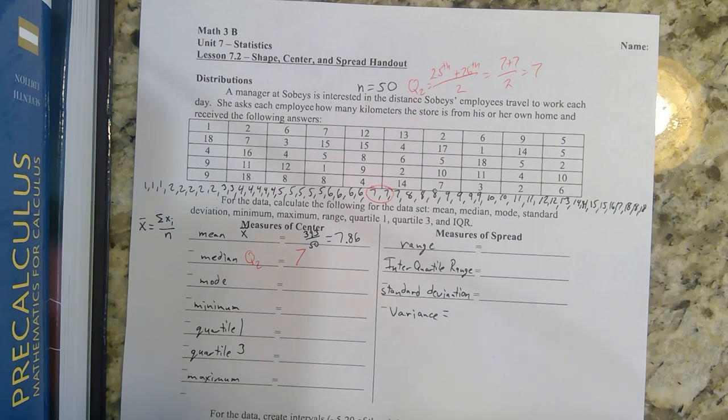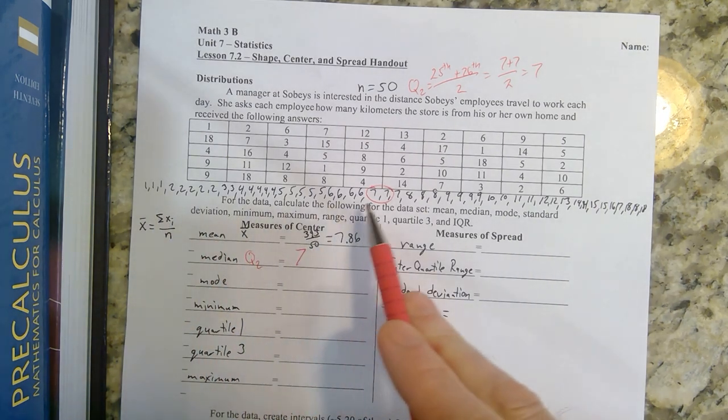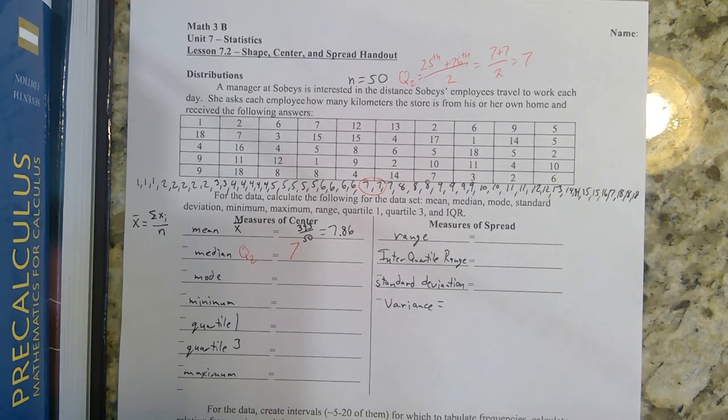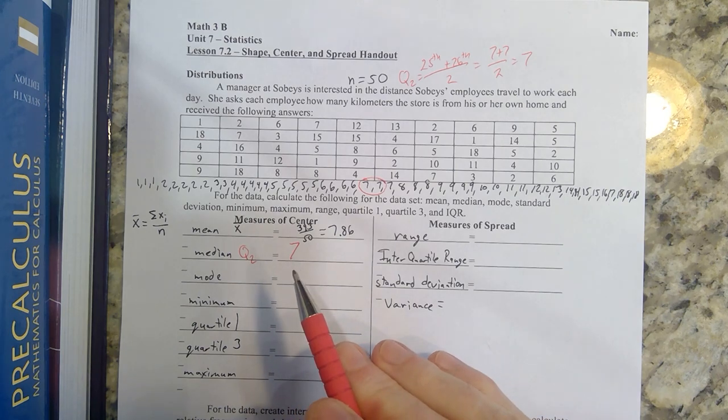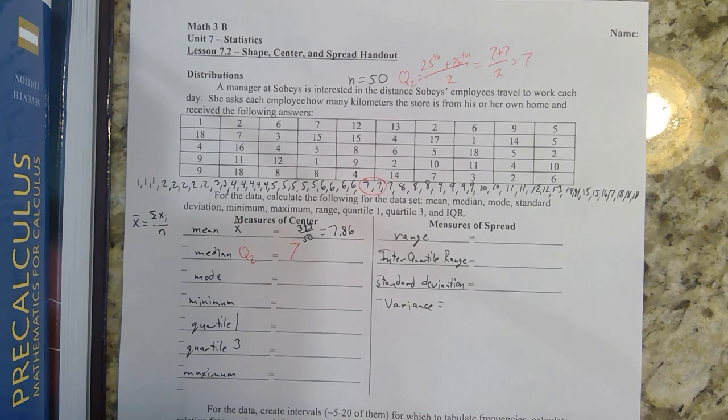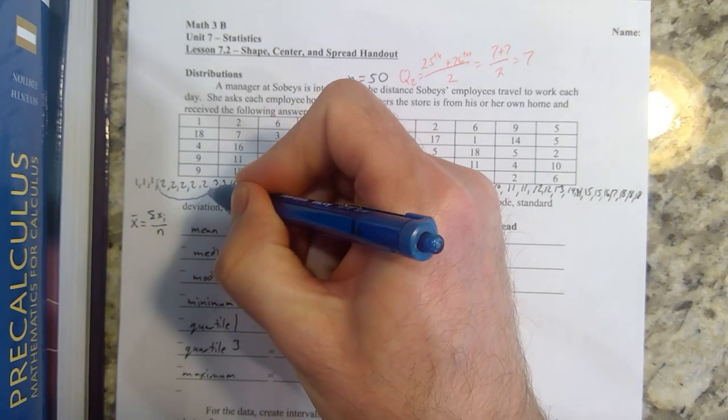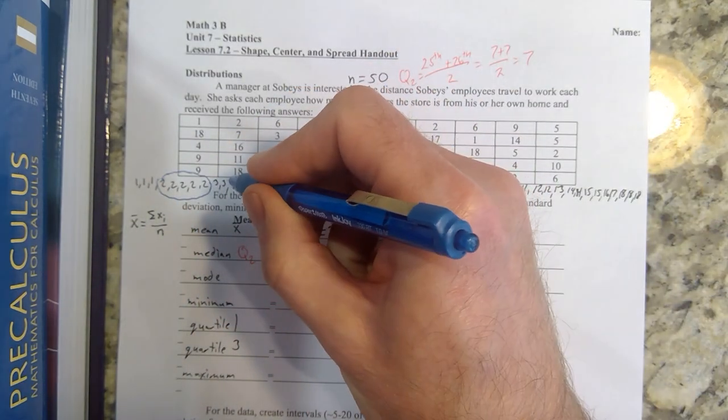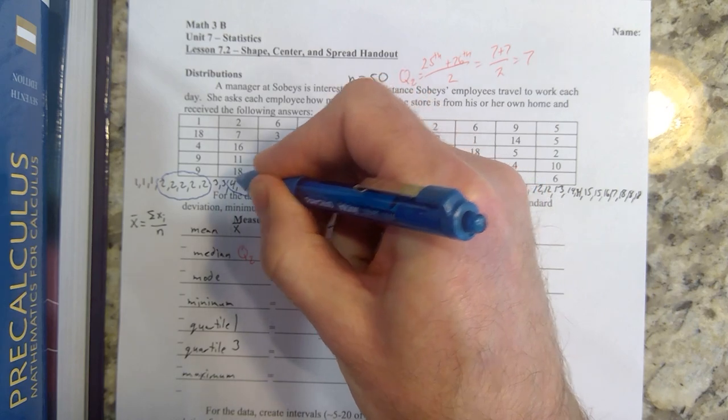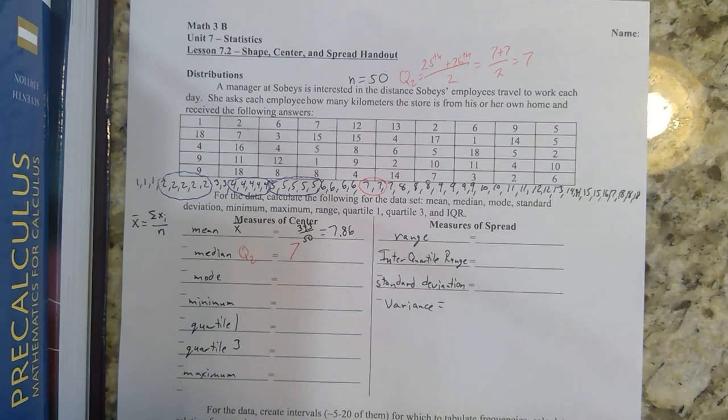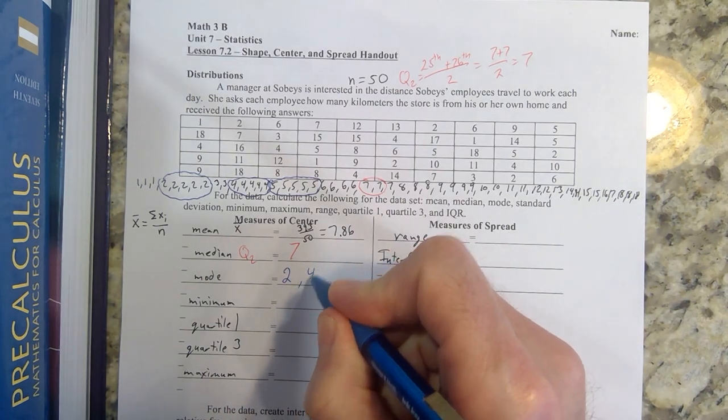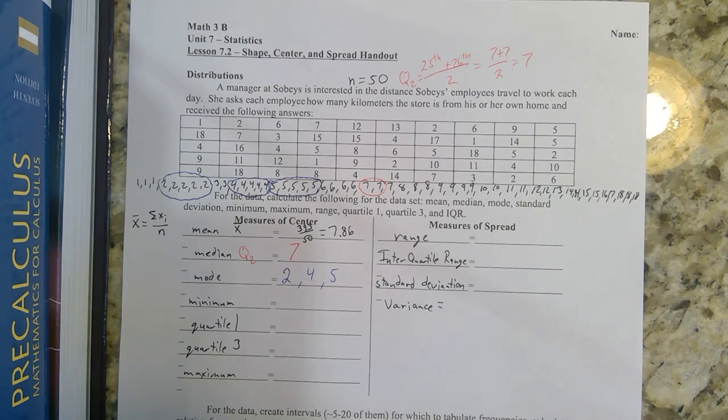To find the mode, I need to find whichever value occurred the most number of times. If every value only occurs once, then there's no mode. In this case, I had the number two occur five times, the number four occur five times, and the number five occur five times. Everything else occurred four or less. So my mode is a tie: two, four, and five are all the mode.